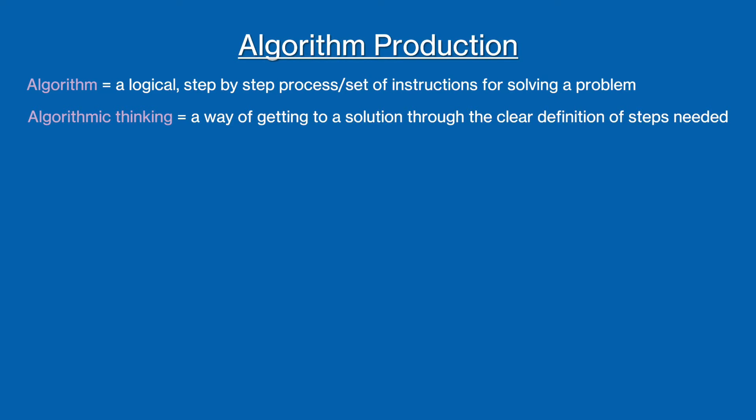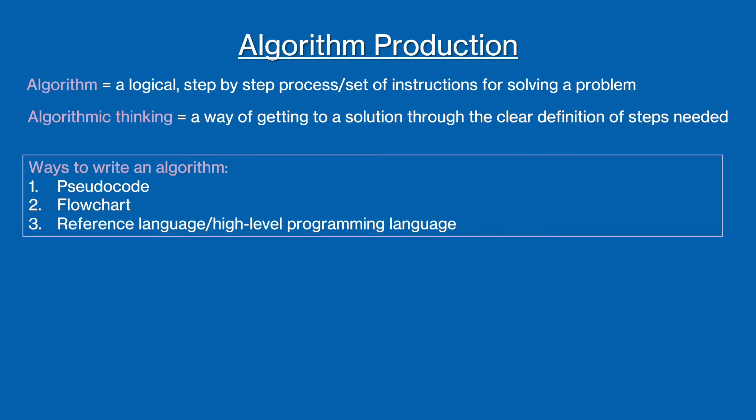There are three main ways we can write an algorithm: pseudocode, flowcharts, and writing code in a high-level programming language like Python or Java. Generally, the algorithm is written and planned in pseudocode or as a flowchart, and then turned into actual code to be executed. Therefore, we are going to be focusing on pseudocode and flowcharts in this video.